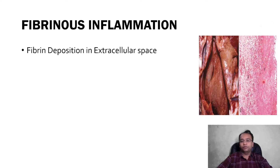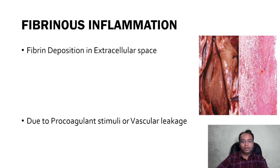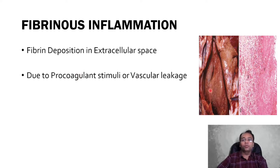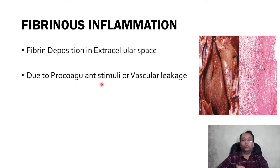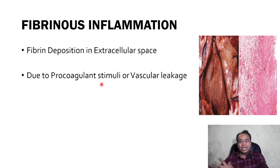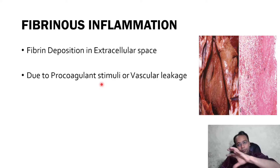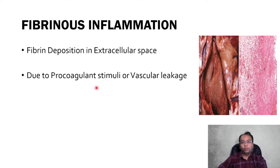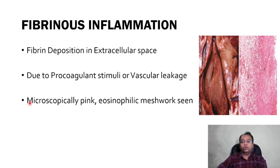Here you can see fibrin material deposition which looks pink in color. Why does fibrin accumulate in extracellular space? There are two reasons: one is vascular leakage and the second is pro-coagulant stimuli. Whenever there is endothelial injury, the coagulation system is activated, and fibrin forms and deposits in extracellular tissue. Because of vascular leakage, plasma protein from blood vessels leaks into surrounding tissue. Microscopically, it looks like a pink eosinophilic meshwork.